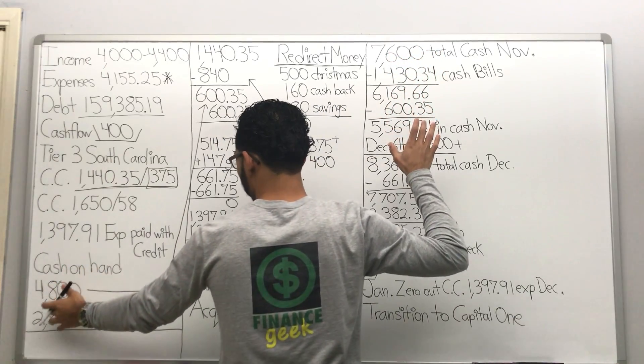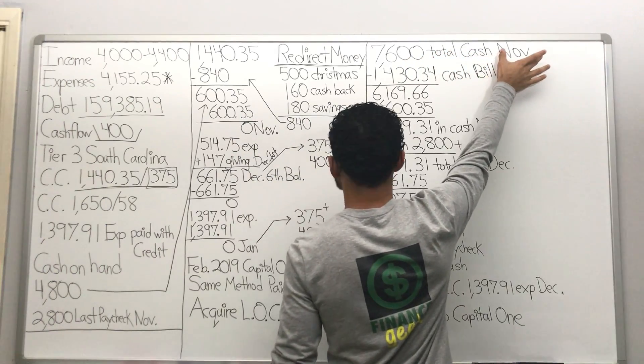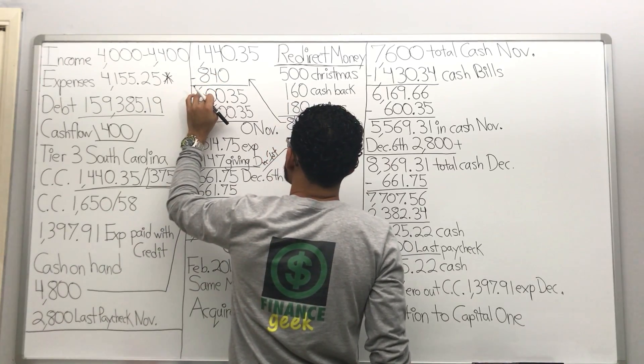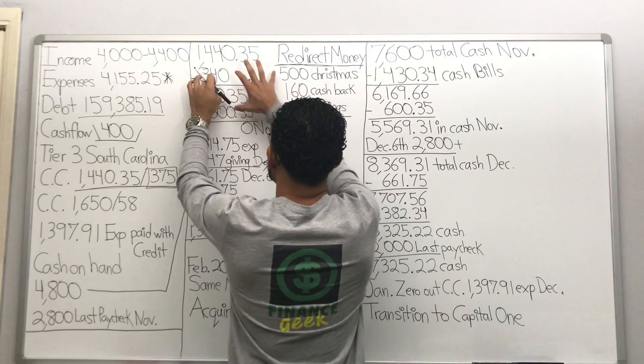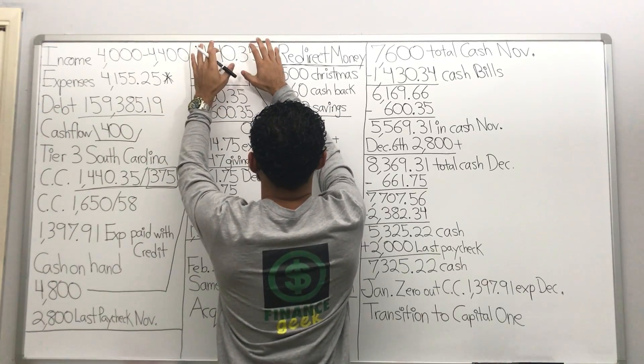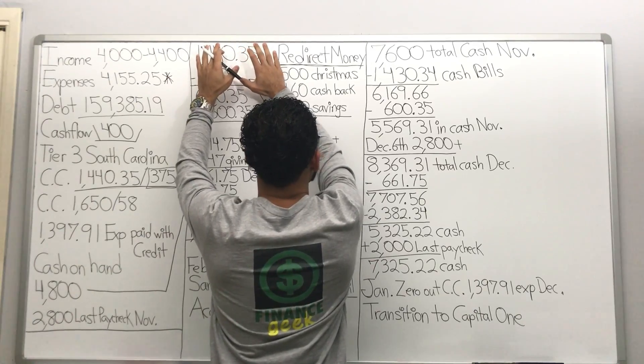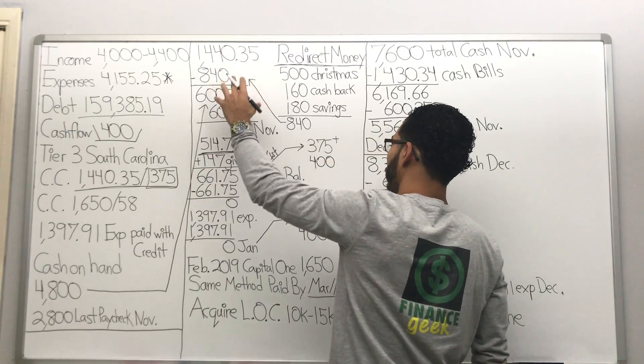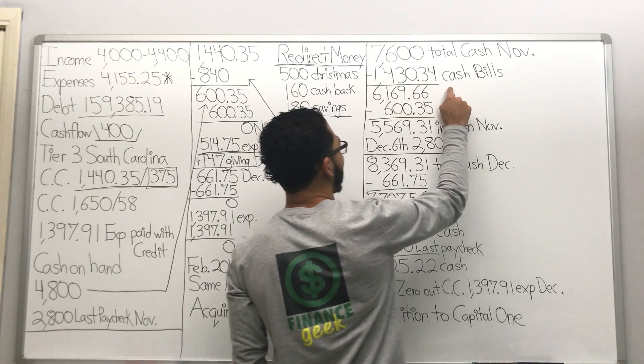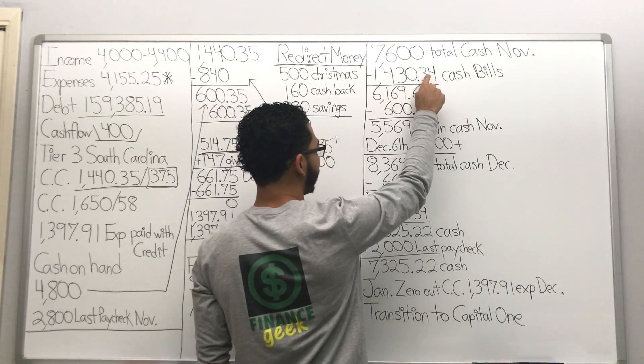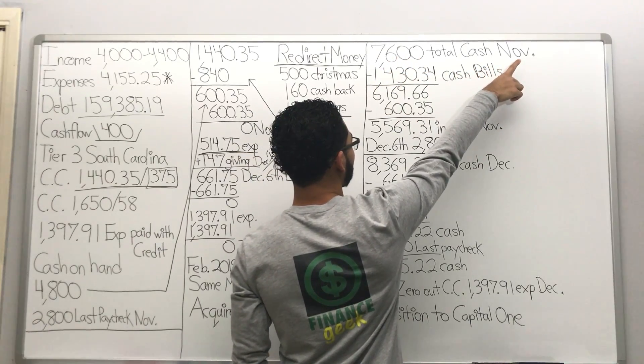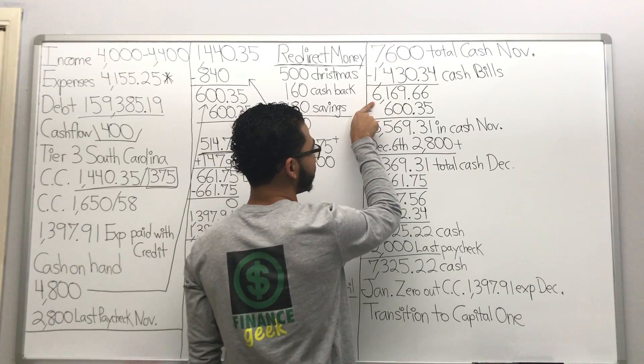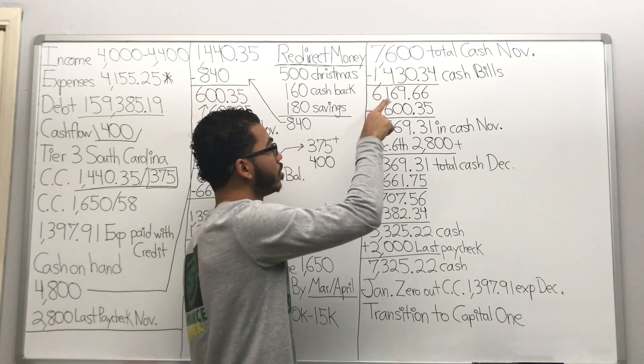Come over here. Remember $4,800, we're at $7,600 total cash November. $635 and the $840 that came from redirected money is gonna pay that $1440.35, gonna wipe that out. $514.75 is gonna get put back on the credit card for expenses. The other expenses she has is $1,430.34 for the rest of November. So that money's gonna go down to $6,169.66. You with me? Cool.